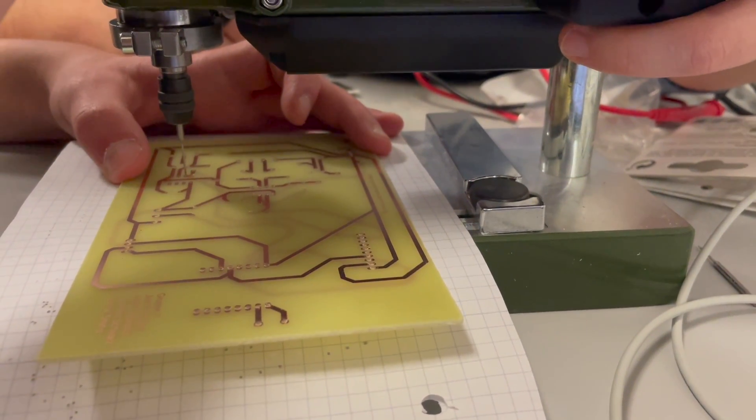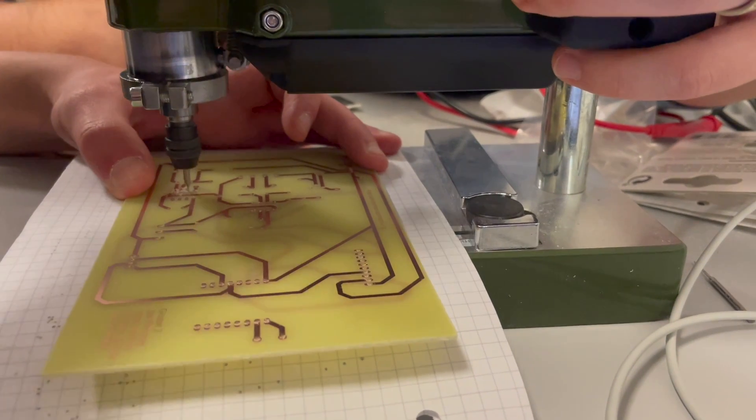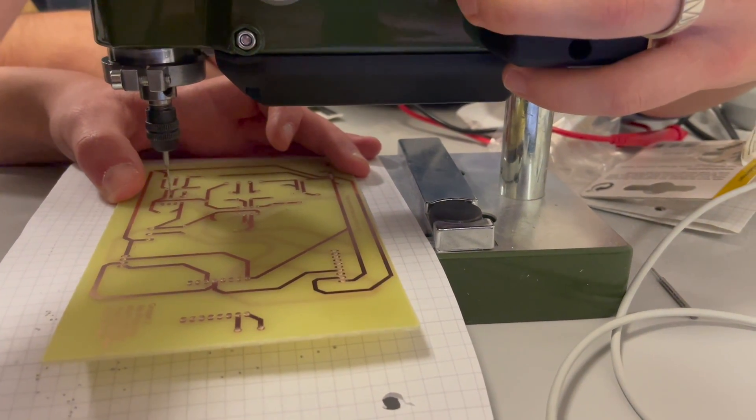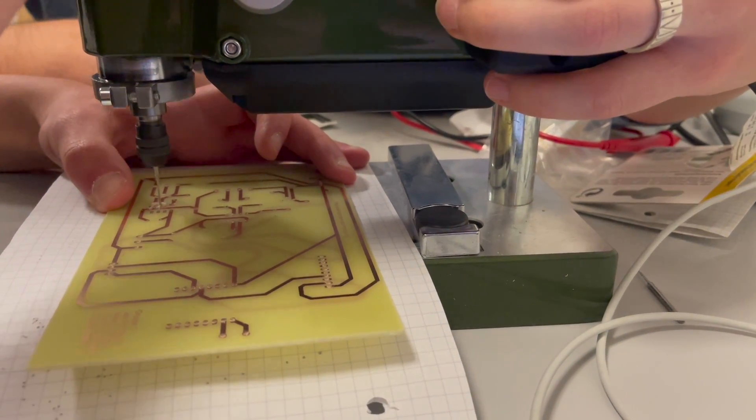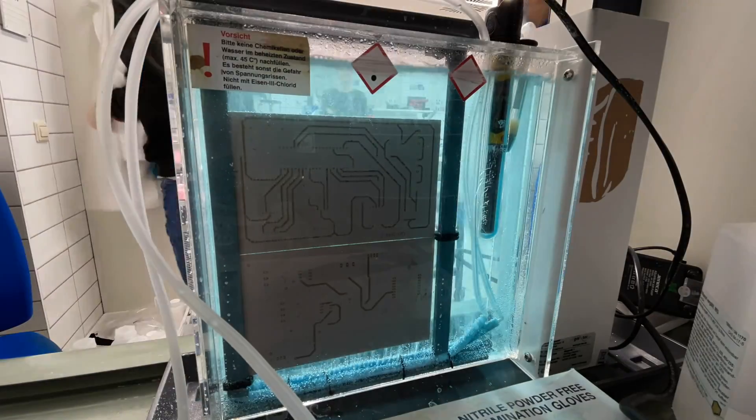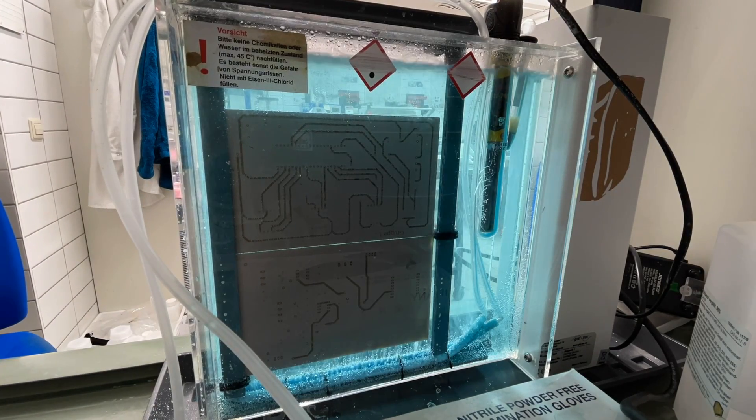So that's basically how to etch and produce a circuit board. I hope you enjoyed the video. If you're interested in more check out our other videos about PCBs and if you want to see the industrial process check out the video from Stranger Parts about a factory in China.